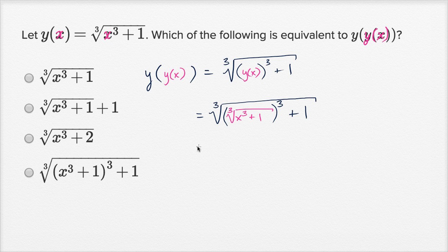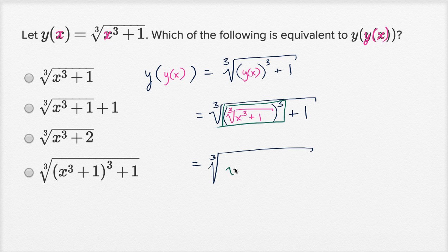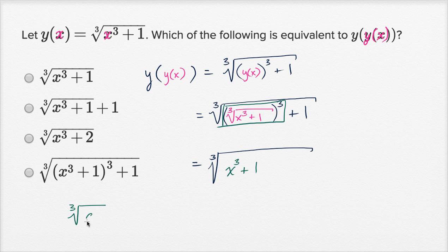So what is this going to be? Well, this is going to be the cube root of — what we have right over here — if I take the cube root of something and then raise it to the third power, this is like raising something to the one-third and then raising that to the third, which is just going to give me this thing right over here, which is just going to evaluate to x to the third plus one. If I take the cube root of a and raise it to the third power, that's just going to be a.